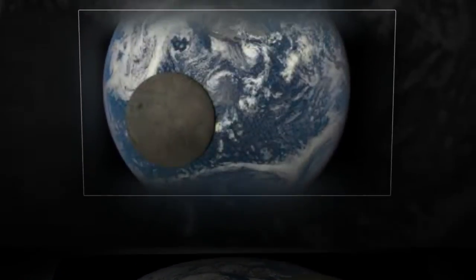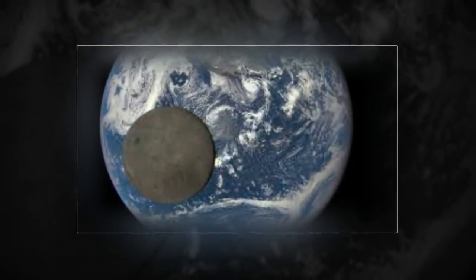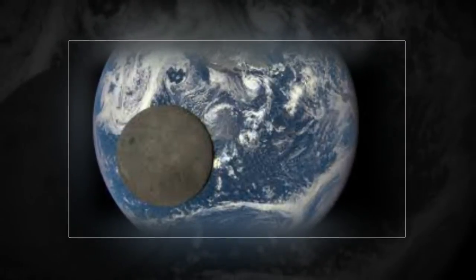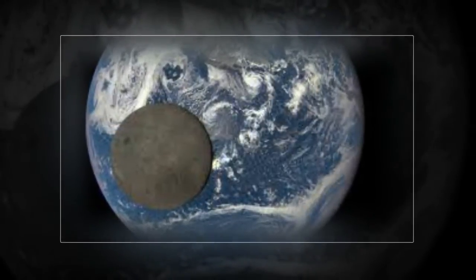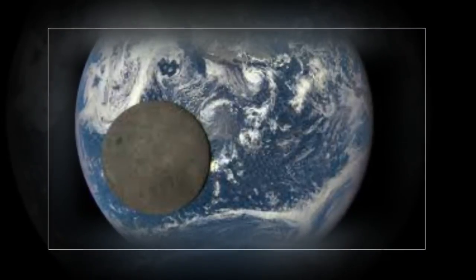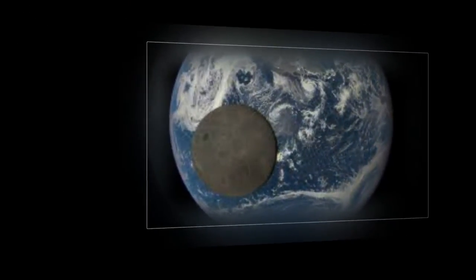The images were captured by NASA's Earth Polychromatic Imaging Camera, a 4-megapixel CCD camera and telescope on the DSCOVR satellite orbiting 1 million miles from Earth.